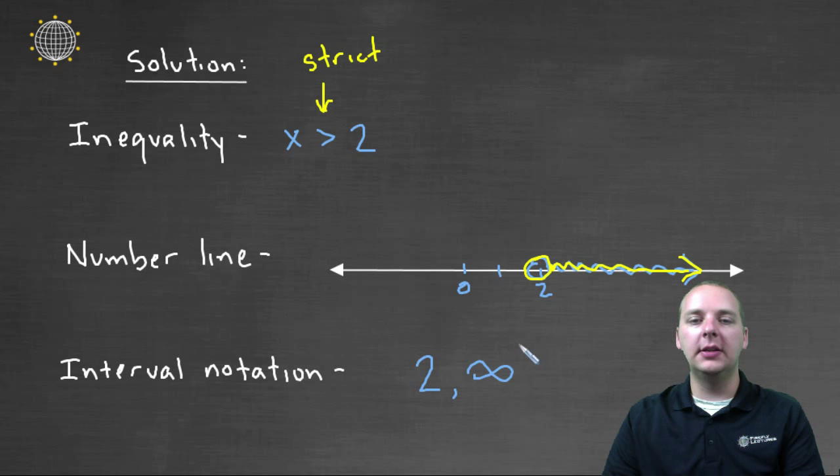And infinity always gets a parenthesis. Now the two on the other hand, because we can't exactly be at two, we can get right up to, but not equal to, this would require a parenthesis as well.